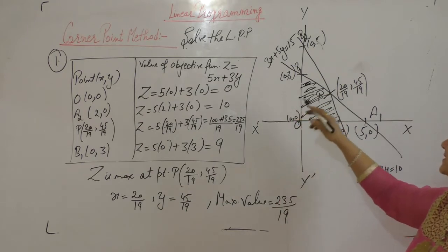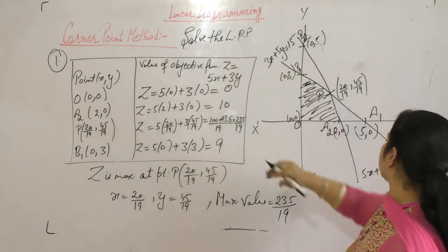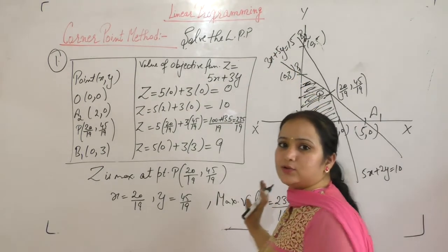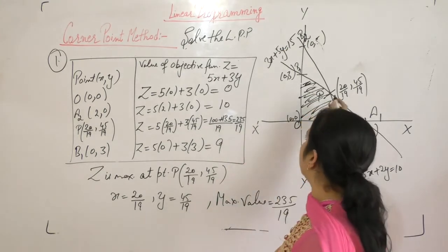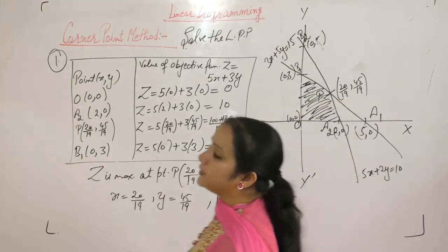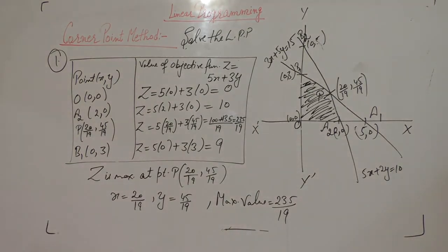Why are we having this region? Since 0, 0 satisfies all these inequalities: 0 plus 0, 0 is less than or equal to 15, 0 is less than or equal to 10, x is greater than 0, y is greater than 0. So this is the region where we have to find our value.